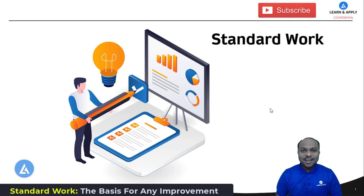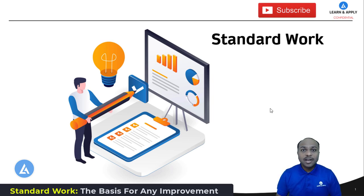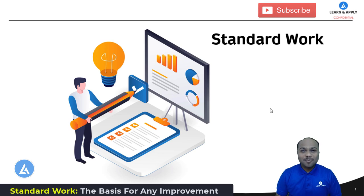Hello friends, welcome back. In this video we are going to understand the next important concept from Lean Six Sigma, which is a basis for any kind of improvement. The concept is standard work. If you want to do any kind of improvement or if you want to sustain any kind of improvement, standard work is the tool that we need to use irrespective of whatever project we have taken.